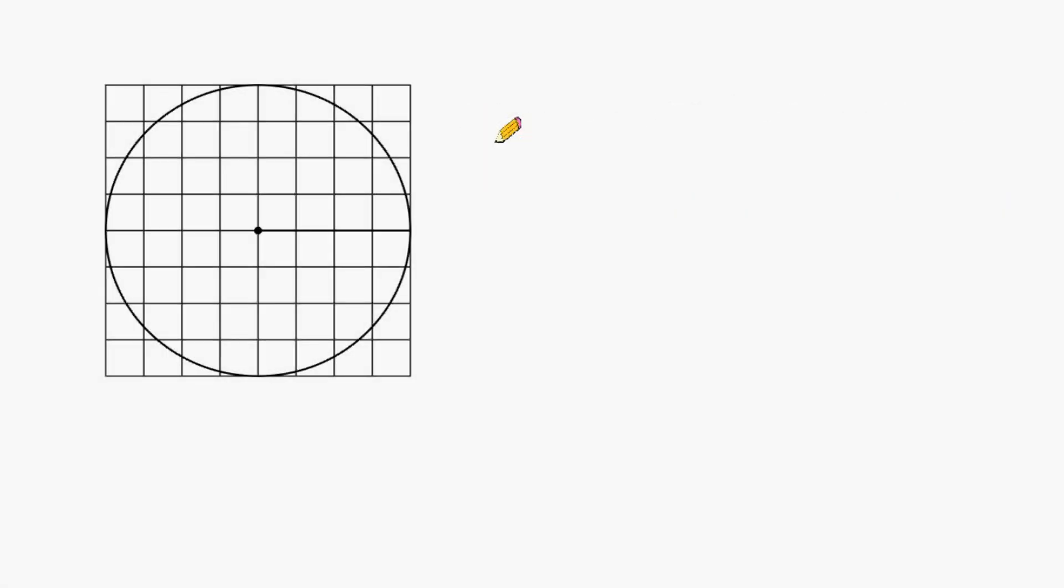Hey, this is Mr. Masonette, and what we're going to do in this tutorial is practice finding the area of a circle when it is located on top of a graph, and we're going to use 3.14 for pi.